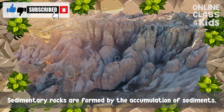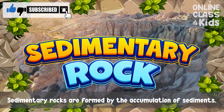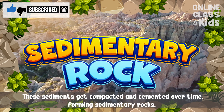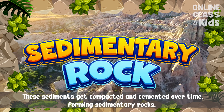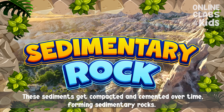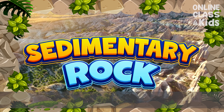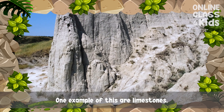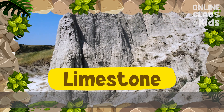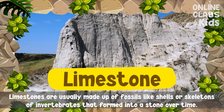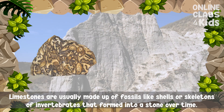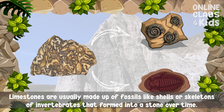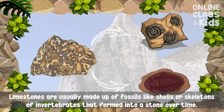Sedimentary rocks are formed by the accumulation of sediments. These sediments get compacted and cemented over time, forming sedimentary rocks. One example of this is limestone. Limestones are usually made up of fossils, like shells or skeletons of invertebrates, that form into stone over time.